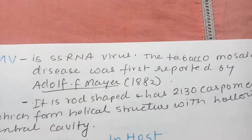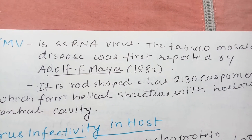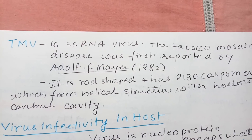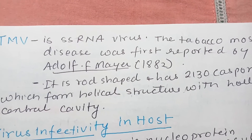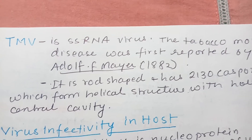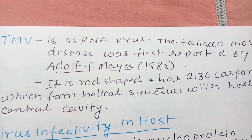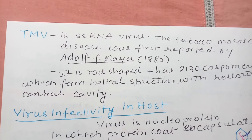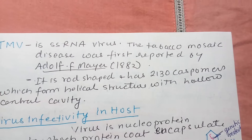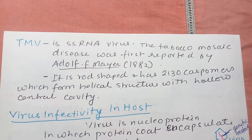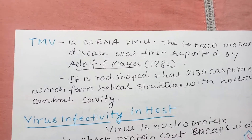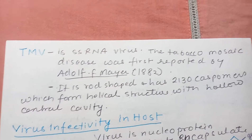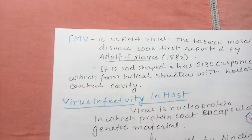Briefly about TMV: TMV is a single-stranded RNA virus. It causes tobacco mosaic disease and was first reported in 1882 by Adolf Mayer. It is rod-shaped and has 2130 capsomers which form a helical structure with a hollow central core.